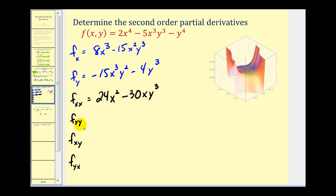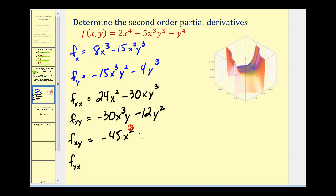For f_yy, we find the derivative of the first partial with respect to y again: negative 30x³y minus 12y². For the mixed partial f_xy, we find the partial derivative with respect to x first, then differentiate with respect to y treating x as a constant. The first term becomes zero, and multiplying the second term by three gives us negative 45x²y².